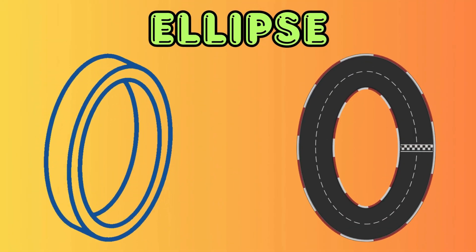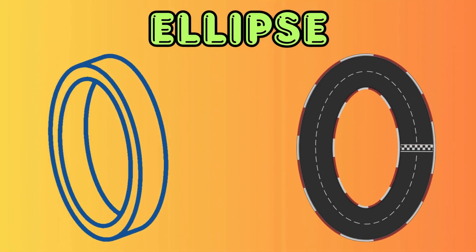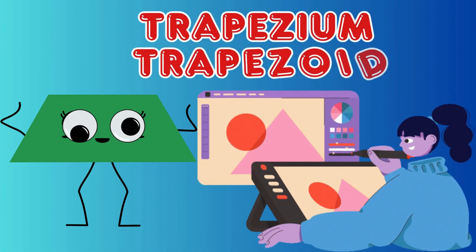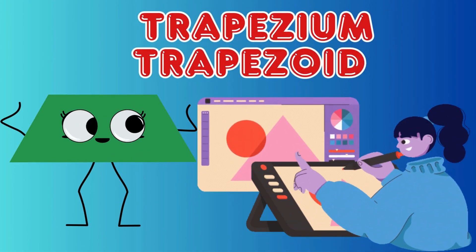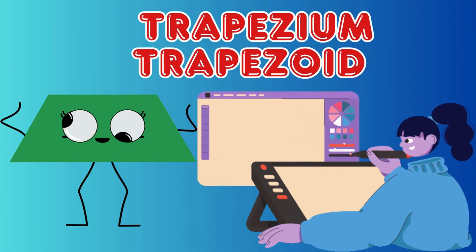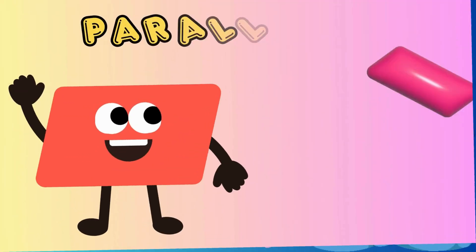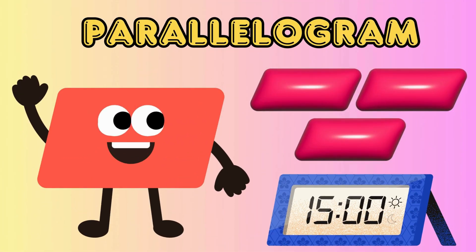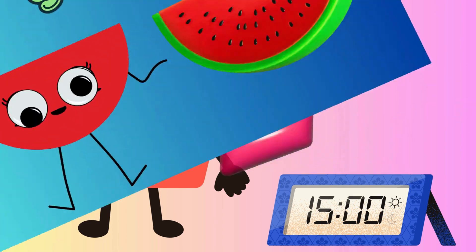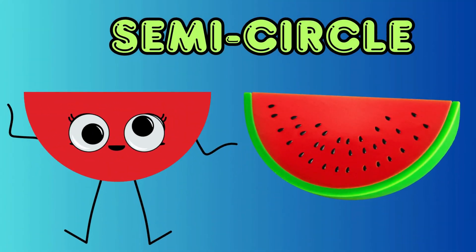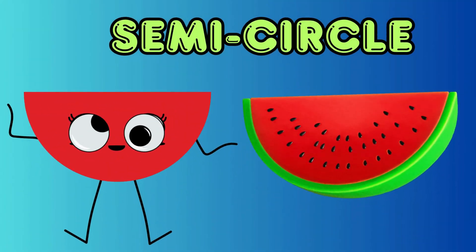An ellipse, which looks like a racetrack. A trapezium or trapezoid, like certain tablet designs. A parallelogram, like tiles or shapes of clocks. And a semicircle, which looks like half a watermelon.